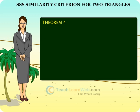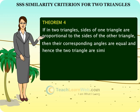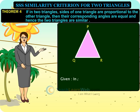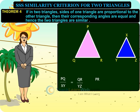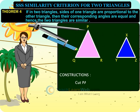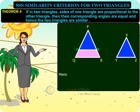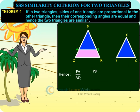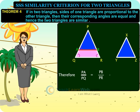If in two triangles sides of one triangle are proportional to the sides of the other triangle, then their corresponding angles are equal and hence the two triangles are similar. Given in triangles: PQ/XY equals QR/YZ equals PR/XZ. Construction: cut PA equal to XY and PB equal to XZ, and join AB. Hence PA/AQ equals PB/BR and AB is parallel to QR. So angle A equals angle Q and angle B equals angle R. Therefore PA/PQ equals PB/PR equals AB/QR.